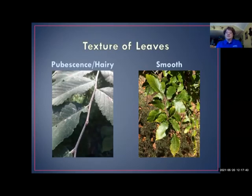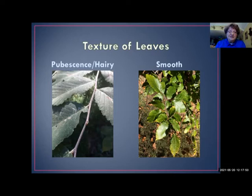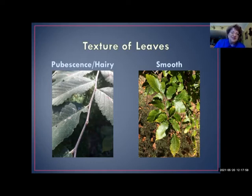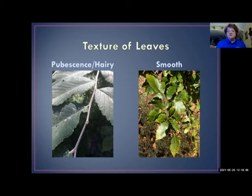The book will also ask about leaf texture: is it pubescent or hairy, or is it smooth? Here are two examples — a fuzzy, hairy, pubescent-textured leaf, and another that's very smooth and shiny.